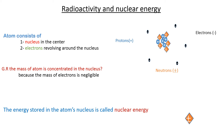The atom consists of a nucleus in the center and electrons revolving around the nucleus. The mass of the atom is concentrated in the nucleus. The energy stored in the atom's nucleus is called nuclear energy.